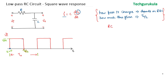The output waveform depends on the RC values with respect to T0/2. We will consider two scenarios: Case 1, when RC is very, very small compared to T0/2, and Case 2, when RC is very, very greater than T0/2. Let us first understand Case 1, where RC is very, very small compared to T0/2.